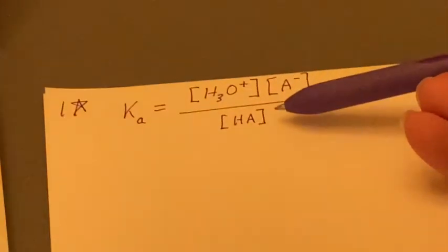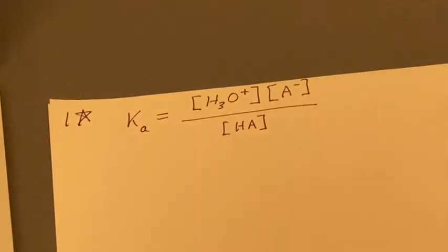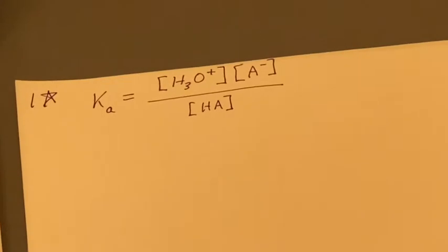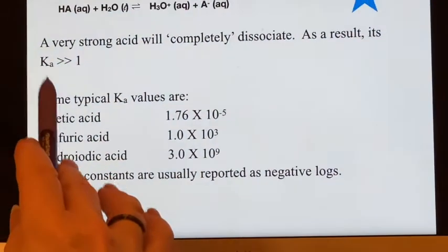You see, its denominator is going to approach zero, and when you divide by zero, your calculator gets very upset at you. I can't show you infinity, so a very strong acid will have a very high Ka value.